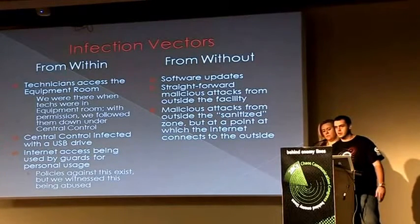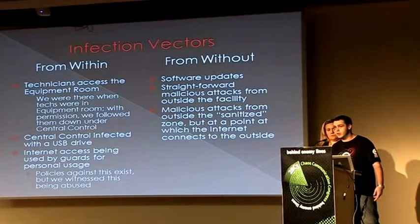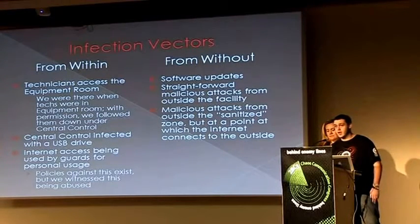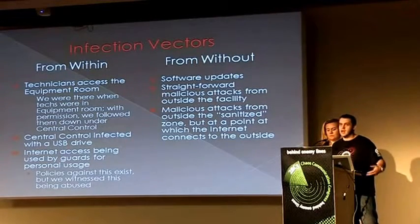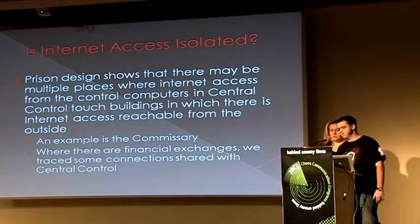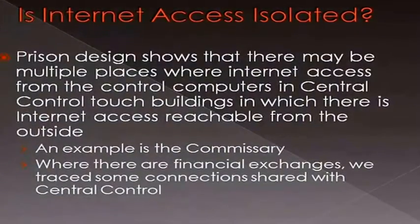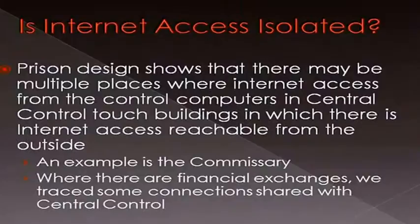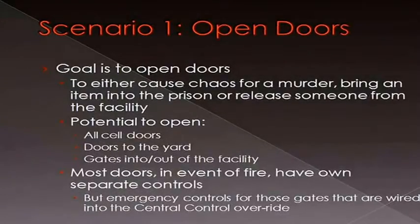An example: when we went down the hatch to look at the equipment, we found two unattended contractors working on the video over IP with no escort, and a third guy coming and going as he pleased. Even if that was an air gap system, there were still people in there unattended with access that you supposedly trust. The commissary wasn't supposed to be connected to the control room, but it was. What kind of badness is possible? Open all the doors, cause chaos — murder could occur inside.